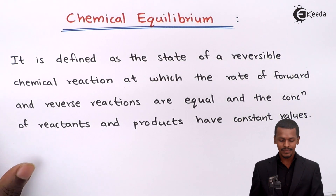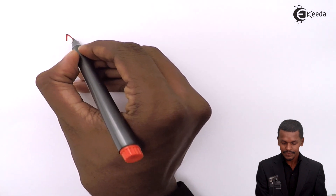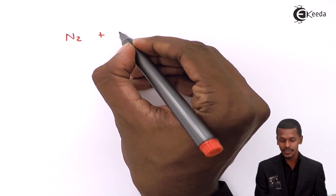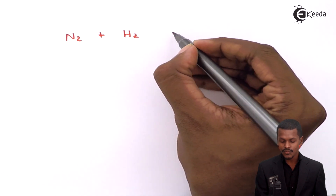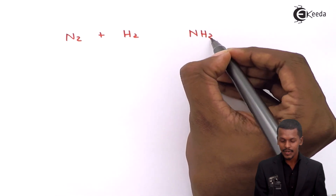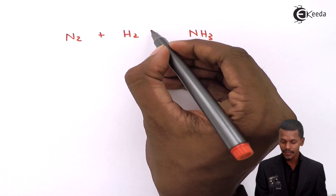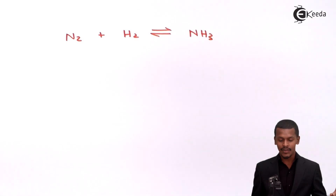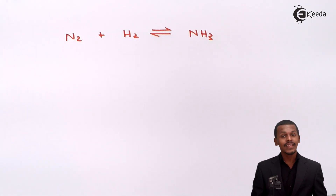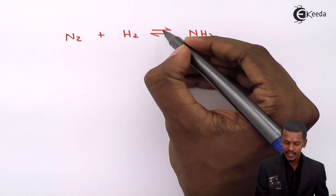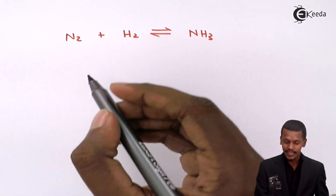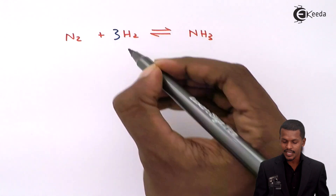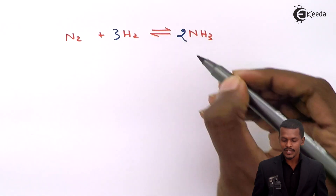Let me give you an example. When nitrogen combines with hydrogen, there is a tendency to form ammonia, NH3. Balancing the reaction: nitrogen reacts with three moles of hydrogen to give two moles of NH3. For this balanced reaction: N2(g) + 3H2(g) → 2NH3(g).